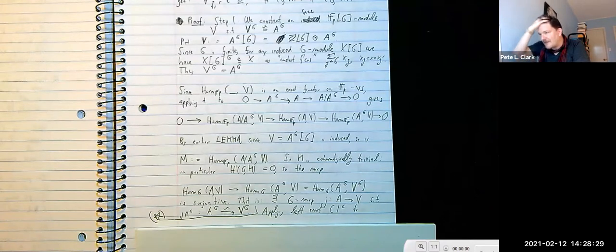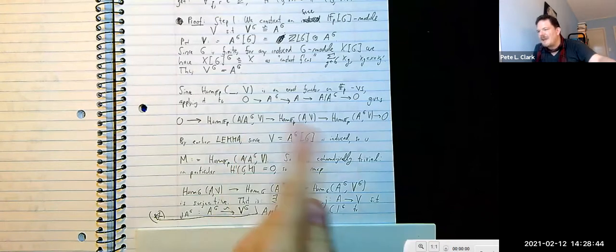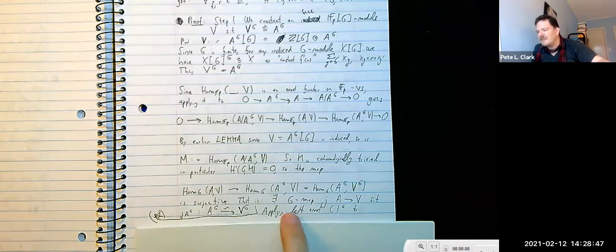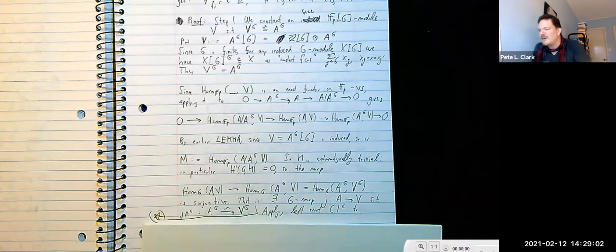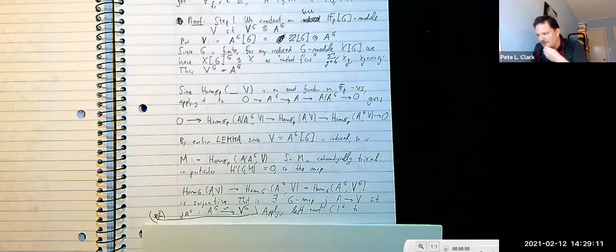This is a nice proof: we cooked up a V where V^G ≅ A^G was clear. The magic of homological algebra gave us the extension of this map. Next we check it's an isomorphism by looking at its kernel and co-kernel and showing both are zero — applying standard useful techniques in homological algebra and group homology.